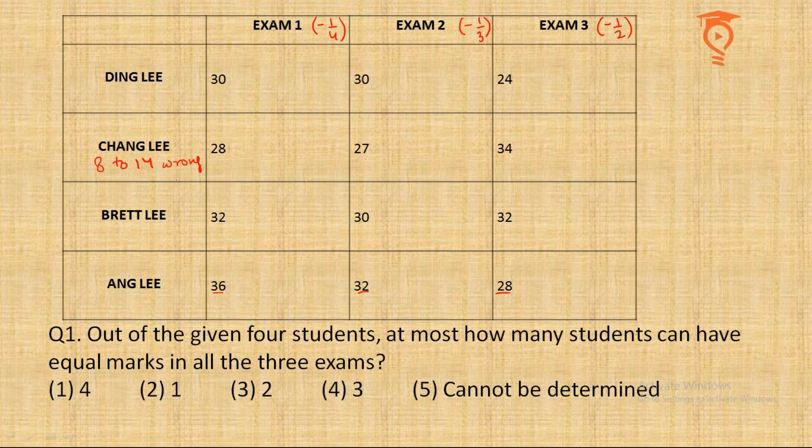There is also a constraint specific to Changley — in each exam he does 8 to 14 questions wrong. These important constraints are noted here so I don't forget them. Now, every question in this set comes with its own specific instructions. The first question asks: out of the four students, at most how many students can have equal marks in all three exams?